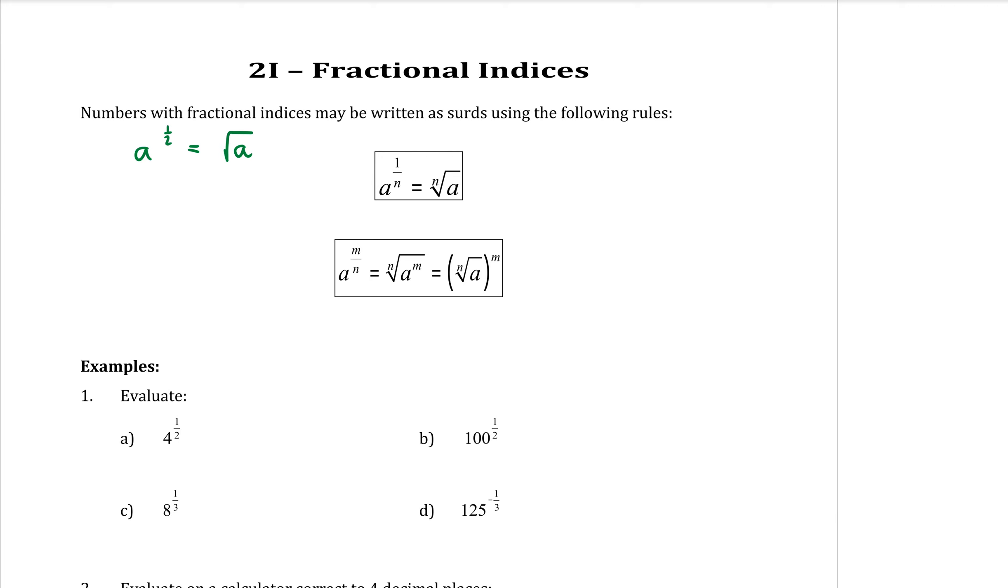Any higher number than that. So 1 third. So the A still comes underneath the square root sign, but the 3 comes out the front, making that a cubed root of A.